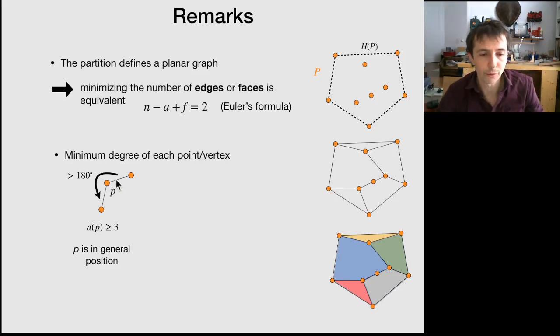if you want to satisfy the convexity constraints. And the reason is, if you want only two edges, well, you are left on one side with an angle of more than 180 degrees. So this face would not be convex, typically. So the degree of P is at least 3.